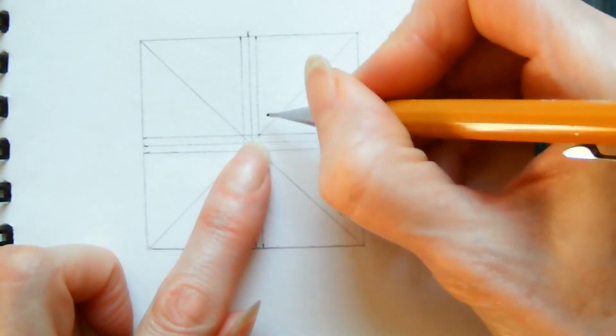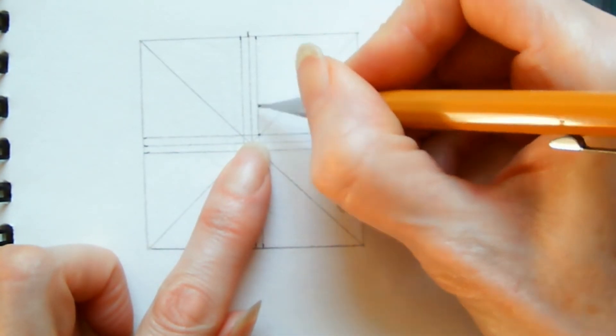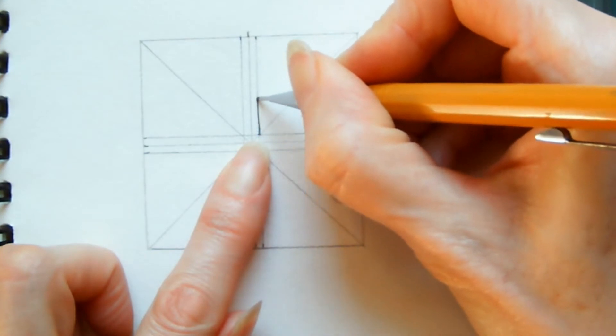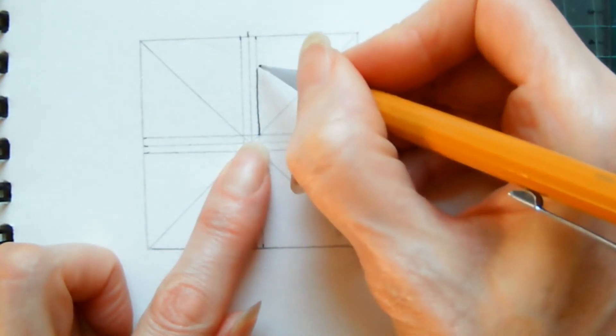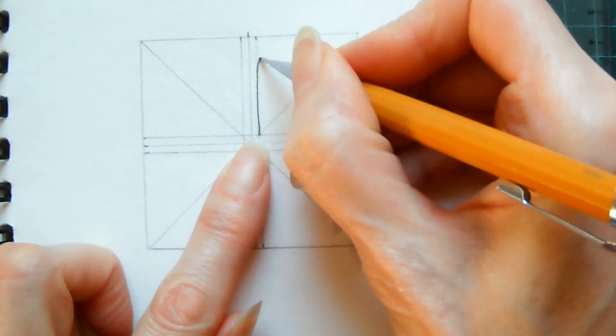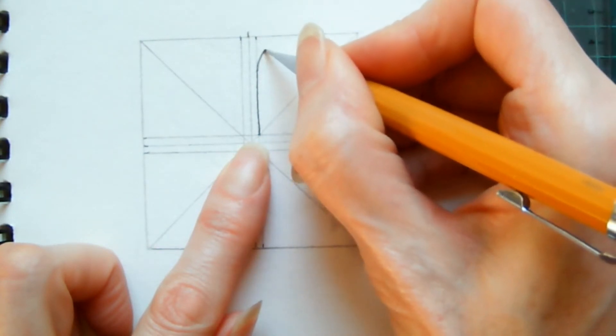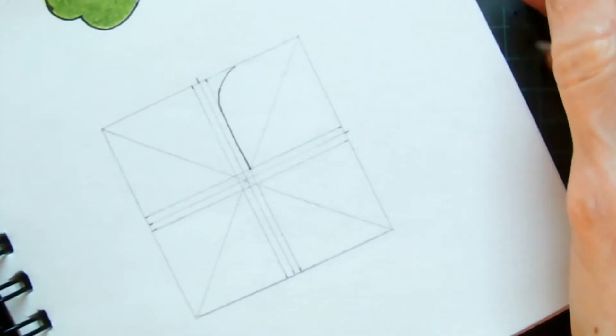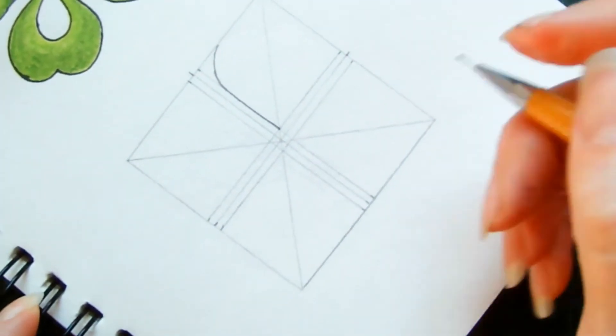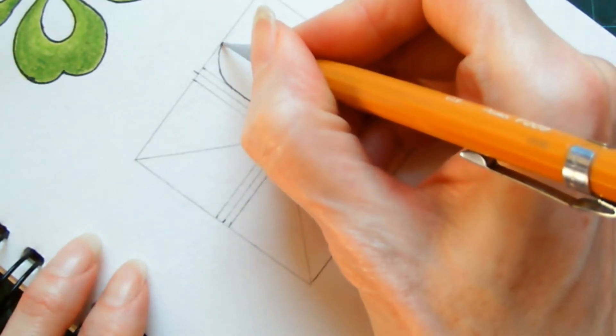Then we're going to curve the line so it hits this top guideline here. And then it might be easier just to move your paper as well. You're going to curve back down so that your curve hits the central line here, and it's going to look like the top of a heart.